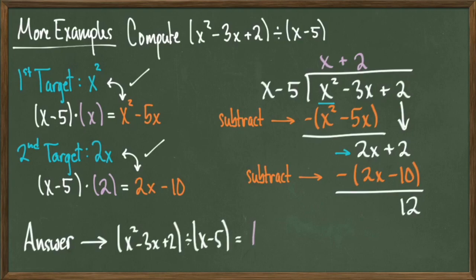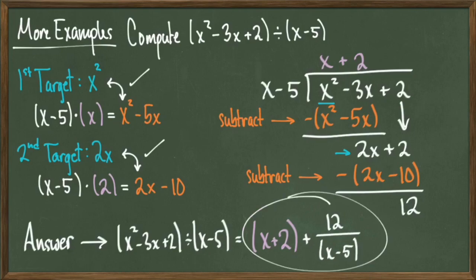Therefore our quotient is x plus 2 and our remainder is 12, therefore we get a final answer of x plus 2 plus 12 divided by x minus 5.